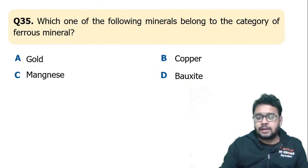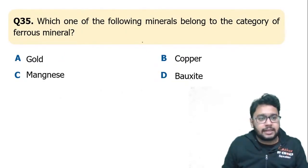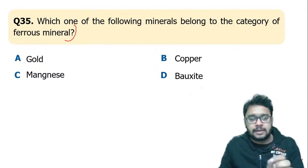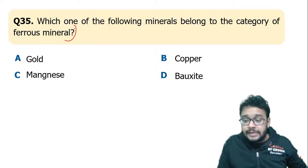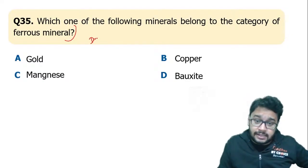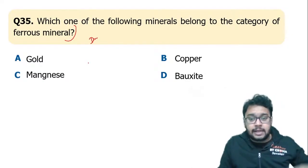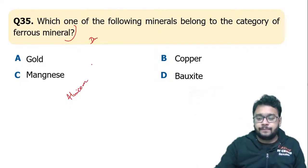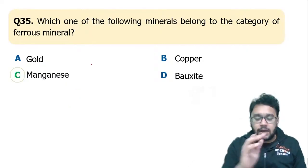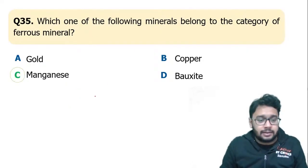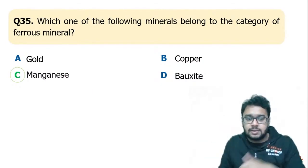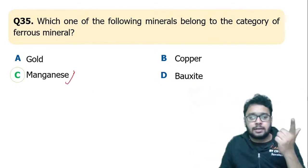Which one of the following minerals belongs to the category of ferrous minerals? Ferrous means which has iron present in it. Remember the acronym ALNICO — aluminium, nickel, cobalt, and manganese. From this, manganese is a ferrous mineral. So C — manganese — is the correct answer.